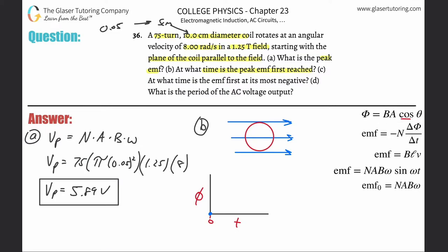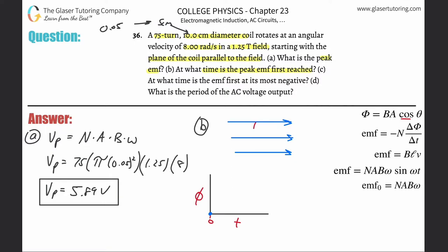The flux is maximum when the angle between the normal and the magnetic field is zero degrees. To get there from the starting position, imagine rotating the coil 90 degrees — now you're looking at it from the side. The coil appears as a thin line, and its normal is now pointing parallel to the magnetic field.